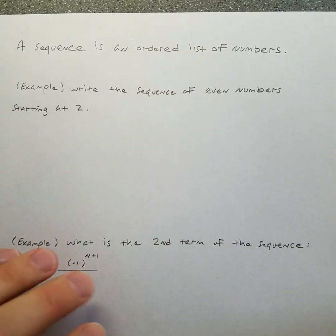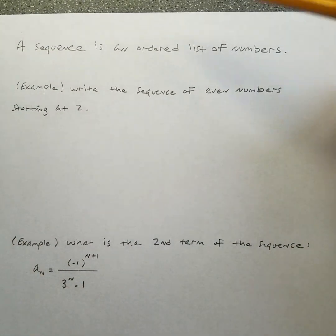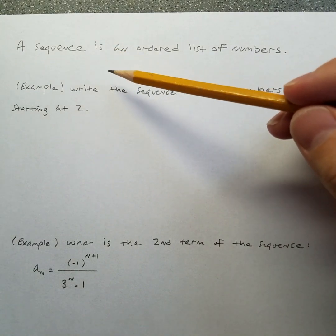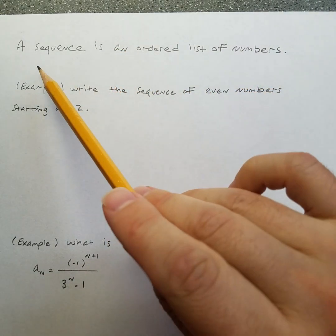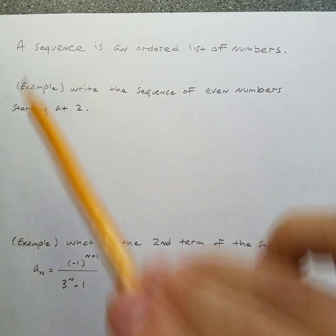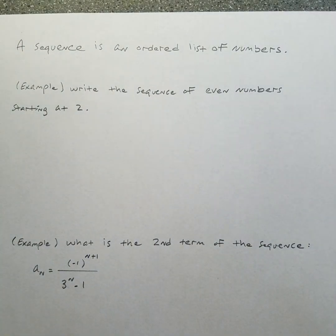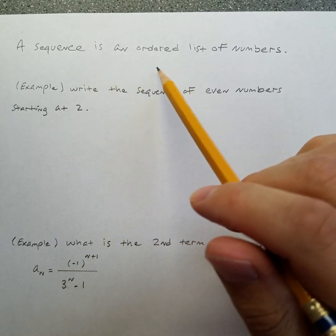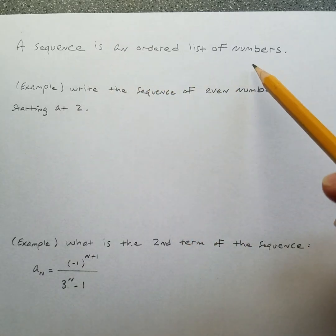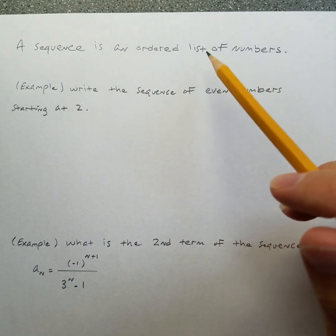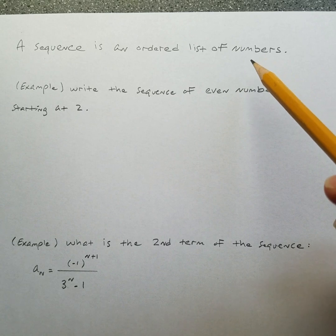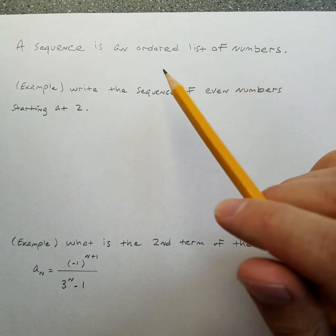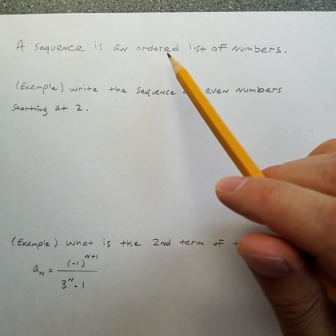For today's video, I have a topic that we'll be using to bring into the next two videos, and that's the definition of a sequence. A sequence is an ordered list of numbers — everybody knows what a list is and everybody knows what numbers are — and a sequence is a list of numbers where there's a real specific order to it.